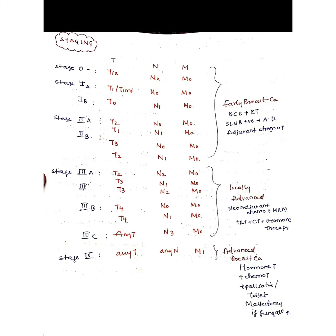Based on TNM staging, breast cancer is grouped into overall stages. Stage 0 has no primary tumor, no regional lymph node involvement, and no metastasis. Stage 1 is divided into 1A and 1B; Stage 2 into 2A and 2B; Stage 3 into 3A, 3B, and 3C; Stage 4 is any tumor size with any lymph node involvement and evidence of distant metastasis. Stages 1, 2A, and 2B are early breast carcinoma; Stage 3 is locally advanced breast carcinoma; Stage 4 is advanced or metastatic breast carcinoma.